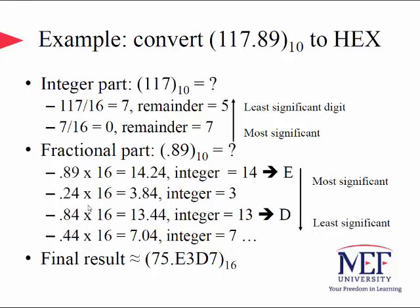For the fractional part, point eighty-nine multiplied by sixteen gives fourteen point twenty-four; the integer fourteen corresponds to E in hexadecimal. Point twenty-four multiplied by sixteen gives three point eighty-four, with integer three. Point eighty-four multiplied by sixteen gives thirteen point forty-four, with integer thirteen corresponding to D. Reading in order of appearance, the fractional result starts with E, then three, then D, and so on. The final result is approximately seventy-five point E3D7 in hexadecimal format.